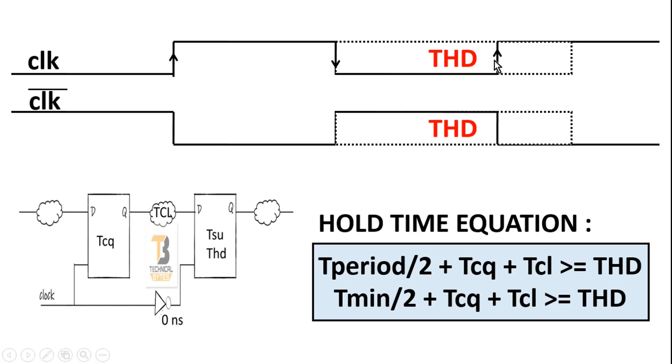Now, at this positive edge, flip-flop 1 will start transmitting its input to its output, but it can only reach the input of the second flip-flop after Tcq plus Tcl amount of time.